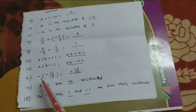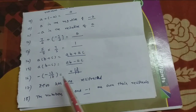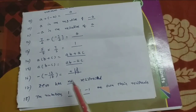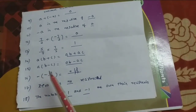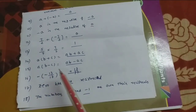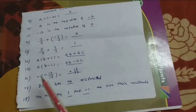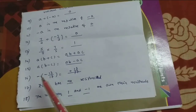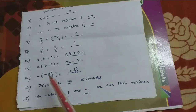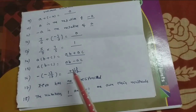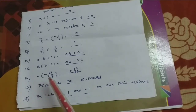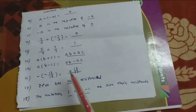Minus of minus 13 by 17 and plus 13 by 17. Minus of minus 13 by 17 is equal to plus. Minus into minus is plus; minus into plus is minus.